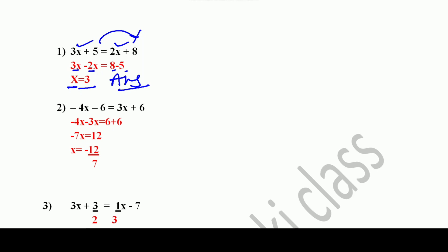Second question: minus 4x minus 6 is equal to 3x plus 6. Xx ko ek taraf rakhna hai — minus 4x to idhar hi rahega, saamne plus ka 3x jayega to minus ka ban jayega: minus 3x. Aur minus ka 6 saamne jayega to plus ka ban jayega: 6 plus 6. Minus 4x minus 3x — minus minus plus hota hai, lekin sign minus ka: ban gaya minus 7x. Saamne 6 plus 6 = 12. X ki value: minus 12 by 7 is your answer.